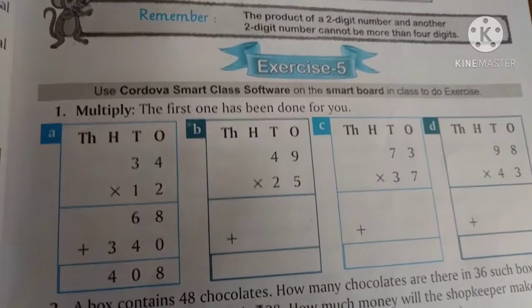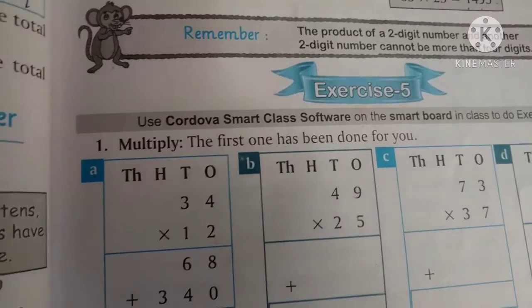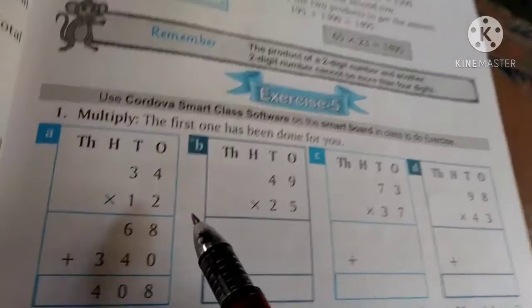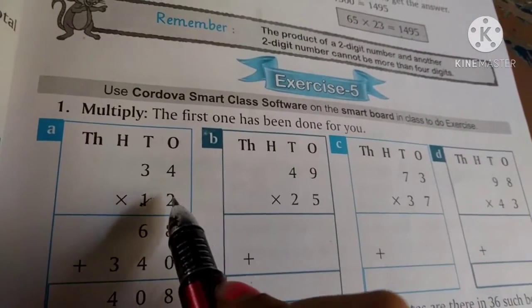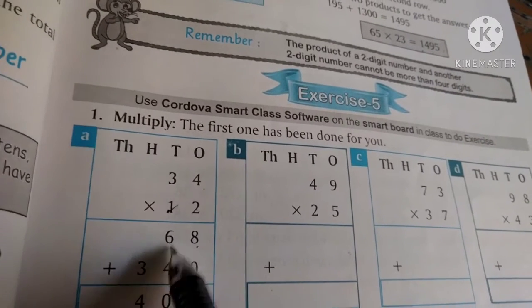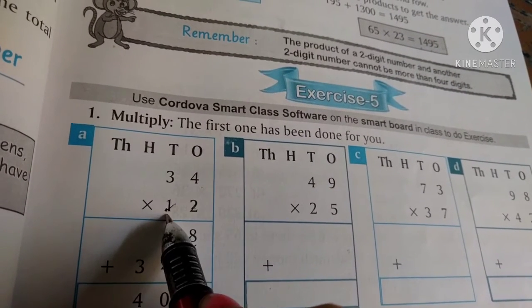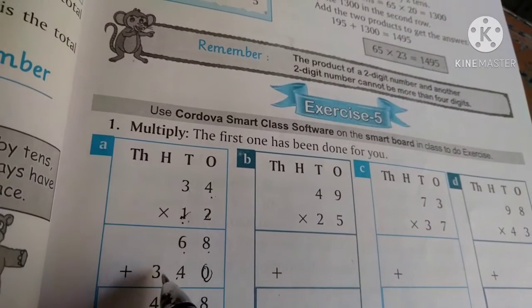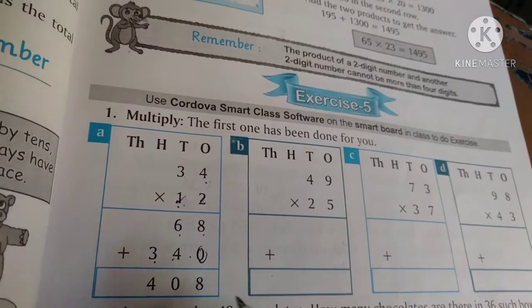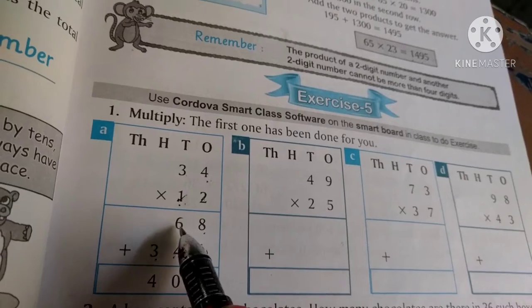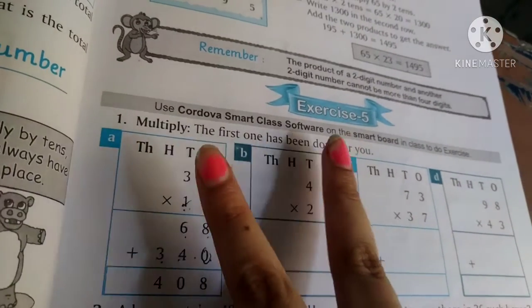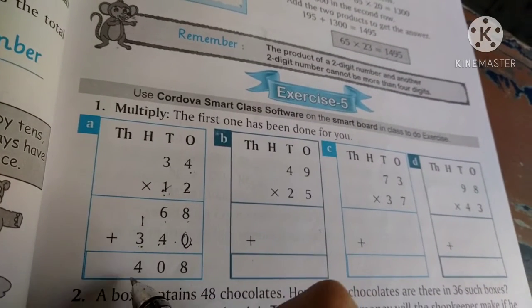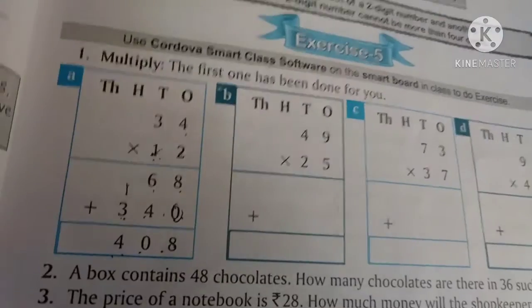The first one has been done for you. 34 multiply by 12. First, 4 times 2 is 8, 3 times 2 is 6. Second step: write 0 first, then 4 times 1 is 4, 3 times 1 is 3. Now add: 8 plus 0 is 8, 6 plus 4 is 10, write 0 and carry 1, 3 plus 1 is 4. The answer is 408.